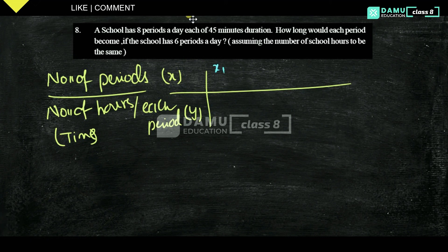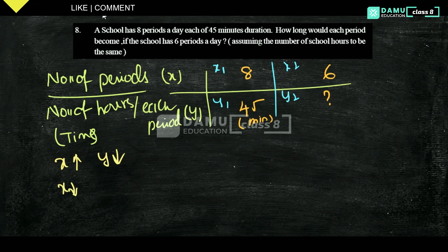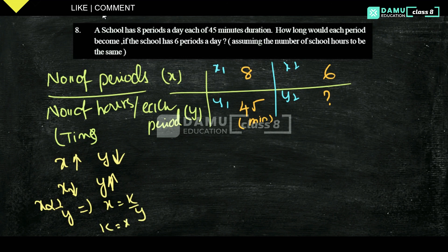Let's set up X1, Y1 and X2, Y2. X1 is the number of periods — 8 — and Y1 is the duration of each period — 45 minutes. Then the number of periods decreases to 6, so X2 is 6, and Y2 is what we need to find. If you increase the number of periods, the time per period will be less; if you decrease the number of periods, time per period will be more. So X is inversely proportional to Y, meaning X = K / Y, so K = X × Y. We write X1 × Y1 = X2 × Y2.